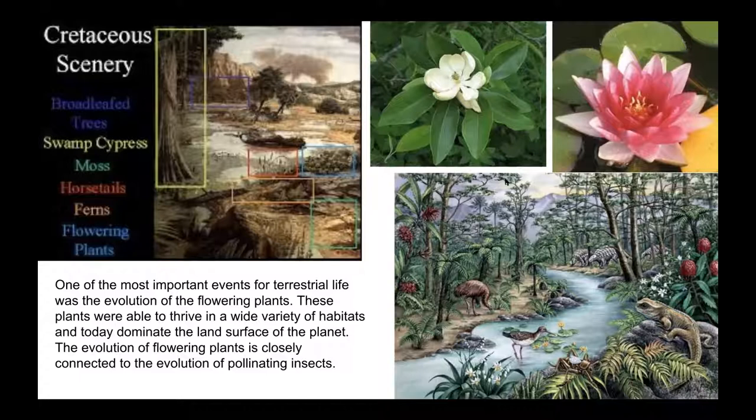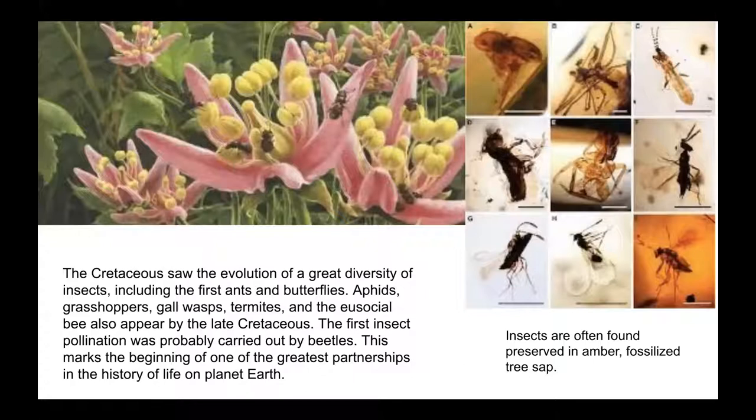Some plants alive then are still around today, like cypress, ferns, horsetails, and conifers. But importantly, new plants came along — flowers. Some of the most ancient flowering plants we have today are magnolias and water lilies in a pond — very, very ancient plants. Another important development on a small scale in the Cretaceous is the evolution of a great diversity of insects, including the first ants and butterflies, aphids, grasshoppers, termites, and eusocial bees — meaning bees that live in a colony like we know today. They all appear by the late Cretaceous.